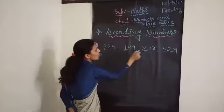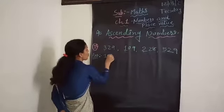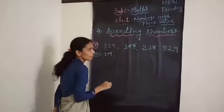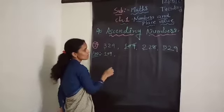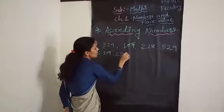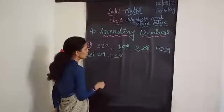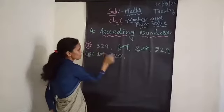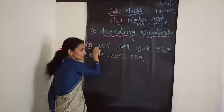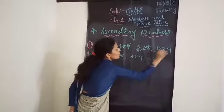Here the Hundreds place digits are 3, 1, 2, and 5. In ascending order we select the smallest first. The smallest is 1, so we write 109 and cut that number. After 1, which number comes next? It's 2, so we write 228 and cut it. After 2, which is bigger? It's 3, so we write 329 and cut it. Last one is 529.